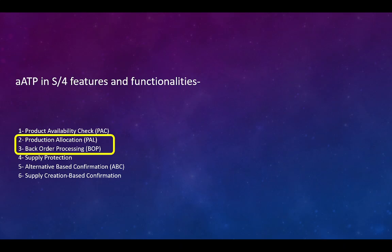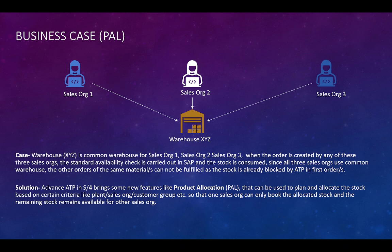Now what is product allocation? Let's take a quick look at the business case. Most of the times it happens that multiple sales organizations or multiple teams use a common warehouse for order fulfillment. When these teams use a common warehouse for order fulfillment, there is a limited quantity available in the warehouse. The sales organizations or the customer teams can create orders and consume all the quantities in one order or in multiple orders belonging to one sales organization. This can create a lot of confusion amongst the different teams and also leads to customer dissatisfaction.